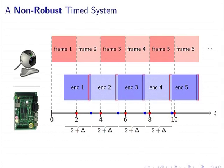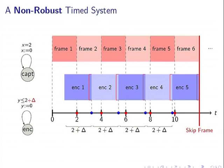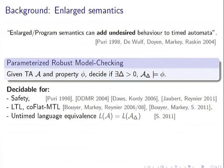Now suppose you implement this system on cheap hardware and end up with additional unexpected delays — so instead of two time units, encoding takes two plus delta time units. These deltas accumulate over time, and at some point you have to skip a frame to cope with the arriving frames. For any positive delta, model checking shows you eventually have to skip a frame. So the qualitative behavior can change for any enlargement, even a very small one.